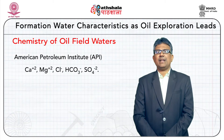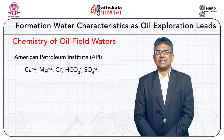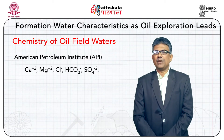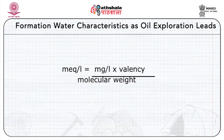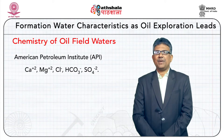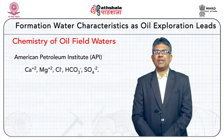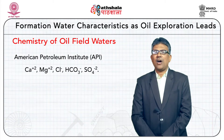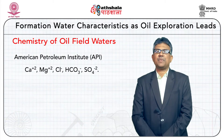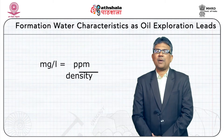For formation water analysis, it is advantageous to express the analysis in milliequivalents per liter because equal numbers represent equal combining weights. The equation used is: milliequivalents per liter = (mg/L × valency) / molecular weight. In analytical results from laboratories, concentrations of cations and anions are commonly mentioned in parts per million by weight. For our understanding, it is preferable to express the results in milligrams per liter, transformed as: mg/L = ppm × density.